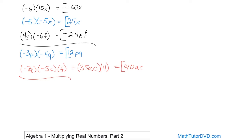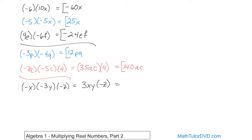What if we have negative x times negative 3y times negative z? We work with the first two terms first. Negative times negative means positive. There's an implied 1 on the x, so 1 times 3 is 3 — giving positive 3 times x times y. Then you still have to multiply by negative z. Positive times negative means you're going to have a negative answer. The number is just 3, so it comes along, times x times y times z. The answer is negative 3 times x times y times z.